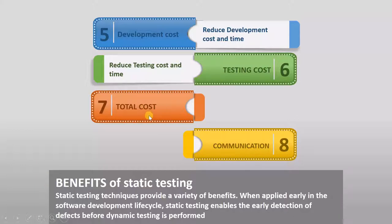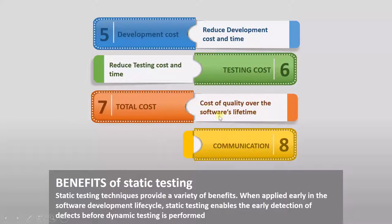With respect to total cost: if development cost reduces and testing cost reduces, the total cost will also reduce. The cost of quality over the software lifetime will decrease, since you are finding most defects during the development activity itself. When the product is in the maintenance stage, you will not find such defects — saving time and cost throughout the software development life cycle.